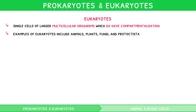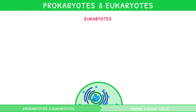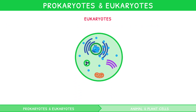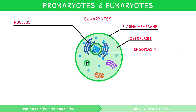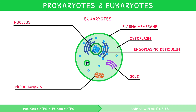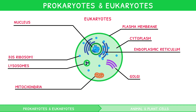All eukaryotes contain eight main structures. These are a nucleus, a plasma membrane, a cytoplasm, endoplasmic reticulum, Golgi, mitochondria, lysosomes, and 80S ribosomes.